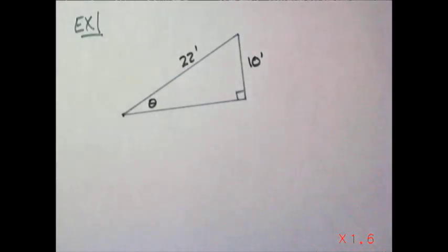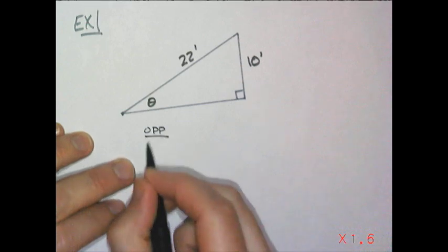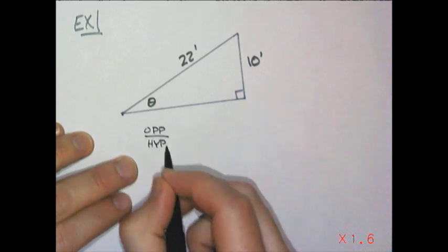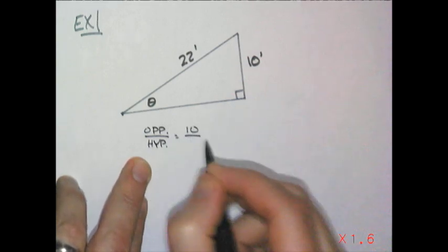I keep on using the opposite over hypotenuse, but that's okay, that's fine. So I want the opposite compared to hypotenuse is equal to 10 to 22.